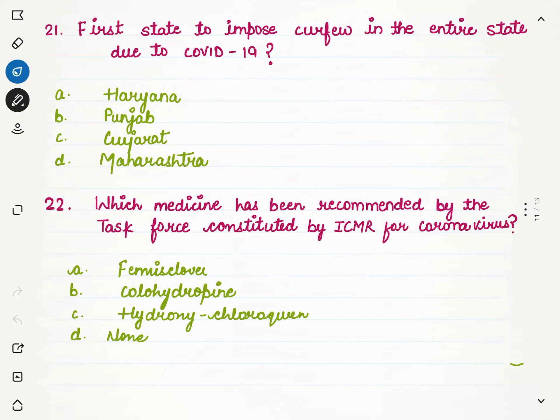Which was the first state to impose curfew in the entire state due to COVID-19? We have four options: Haryana, Punjab, Gujarat, Maharashtra. Punjab was the first to impose curfew. Although Kerala had the first case, they did not impose lockdown — they only made an appeal through Break the Chain for people to stay home. But here, a curfew was actually imposed, and that was Punjab.